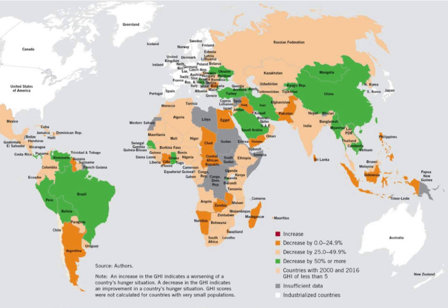The Global Hunger Index is a tool that measures and tracks hunger globally, by region, and by country.